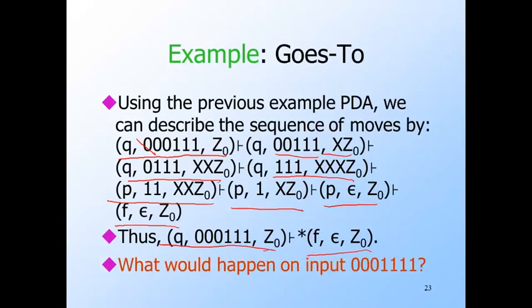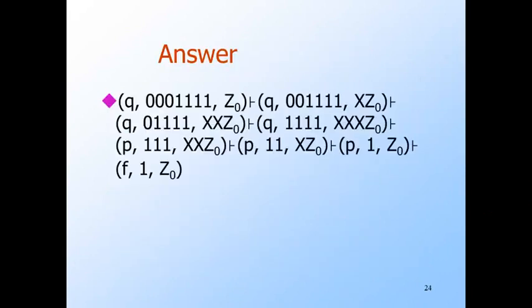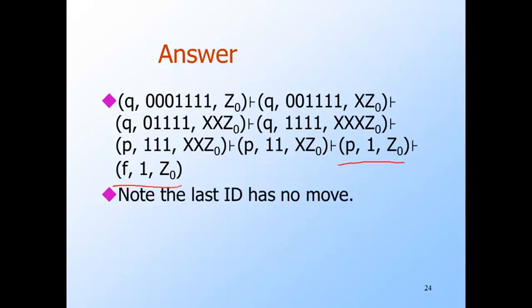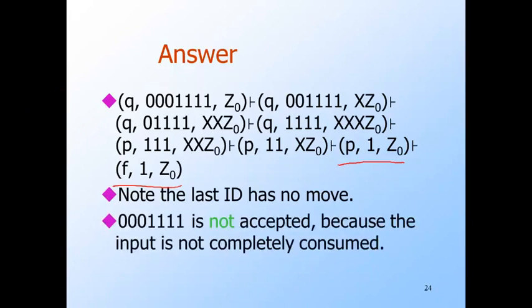In order to understand better the idea of acceptance, we ask: what would happen if there were an extra one on the input? The sequence of IDs is the same except an extra one tags along at the end. The last move, where the state changes from P to F, is still legal because a PDA can use epsilon input even if there is input remaining. State F has no transitions, so the sequence cannot be extended and the last one can never be consumed. We conclude that 0, 0, 0 followed by four ones is not accepted, because the input was not completely consumed, even though we entered a final state during the process.